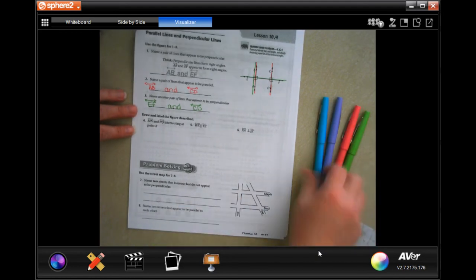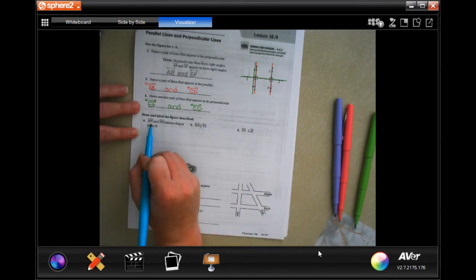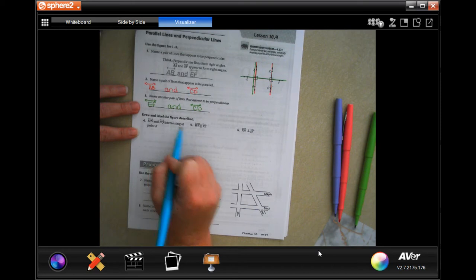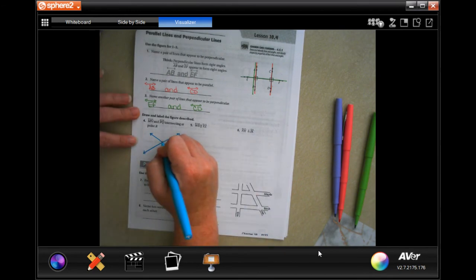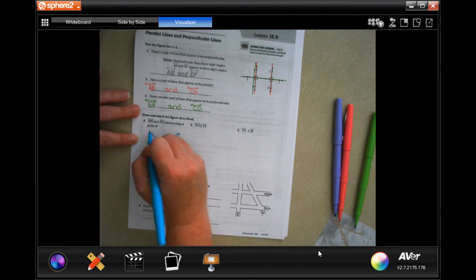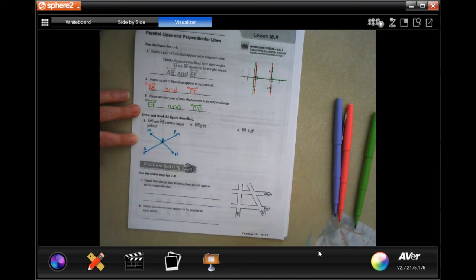Draw and label the figure described. MN and PQ are intersecting at point R. Well, I'm going to say MN and PQ, and then they're going to intersect at point R. Not so bad once you get used to the lingo, guys.